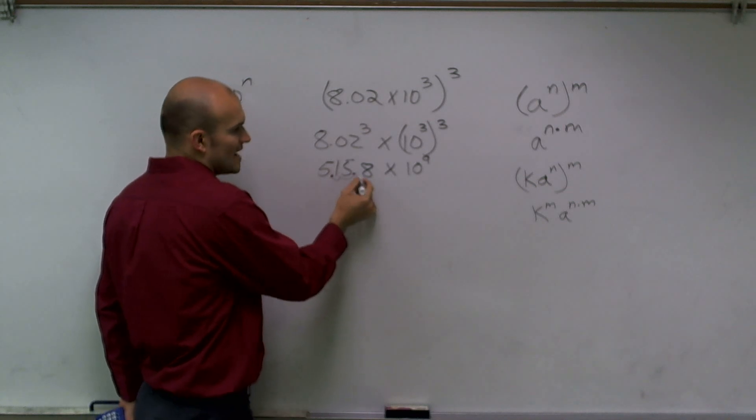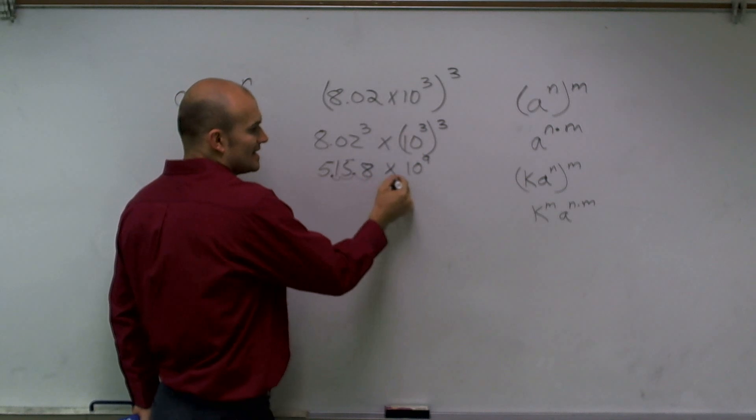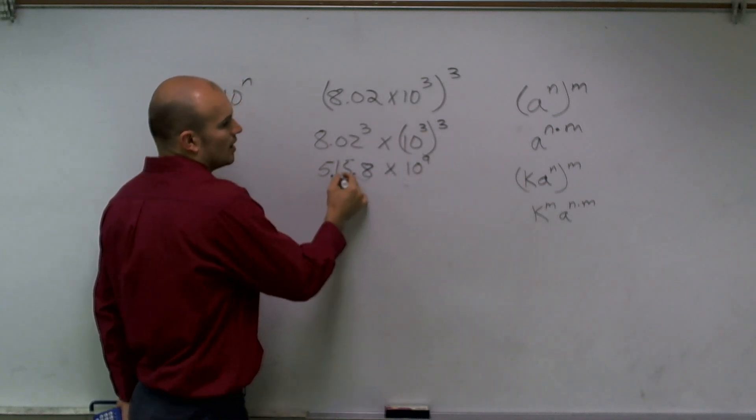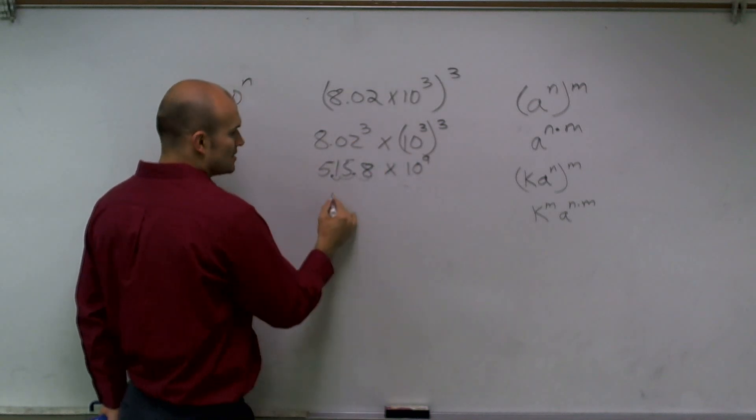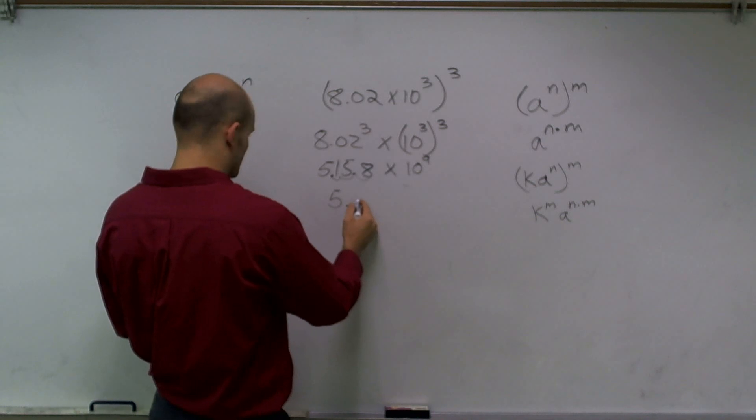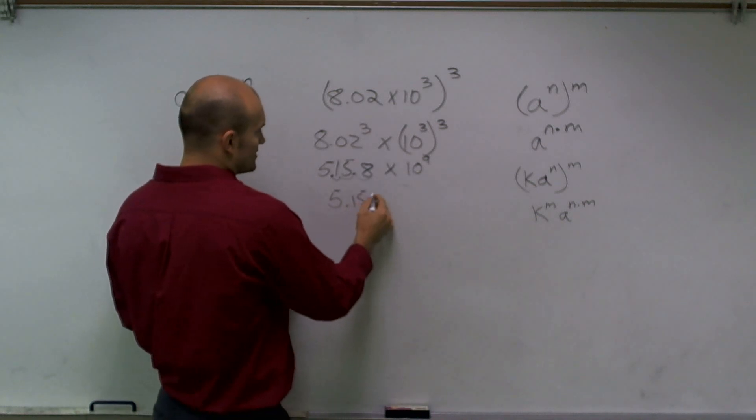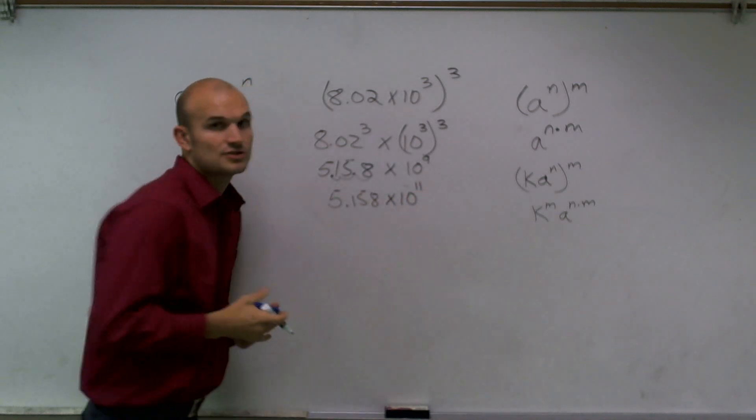So rather than having to go 9 units to the right, because that times 10 to the ninth means 9 units over, now I have to go over 11 more units. So I have to go two more extra spots. So my final answer is going to be 5.158 times 10 to the 11th power.